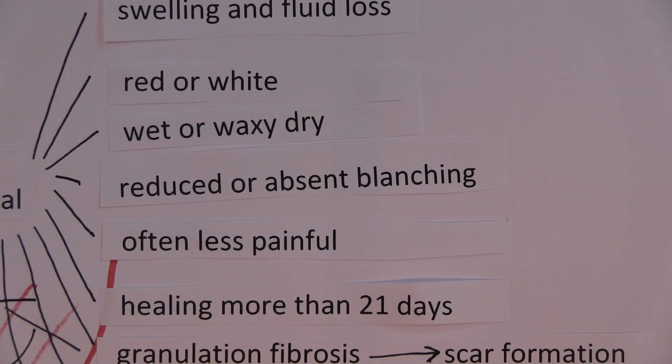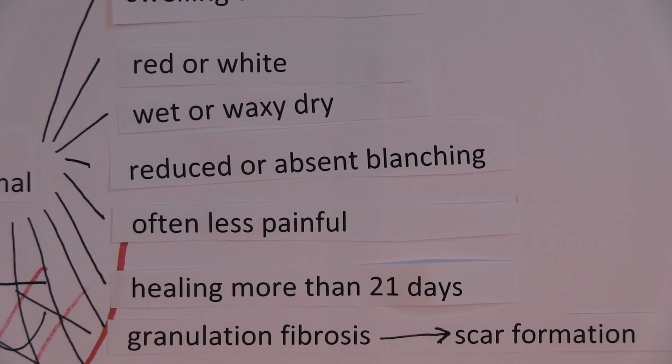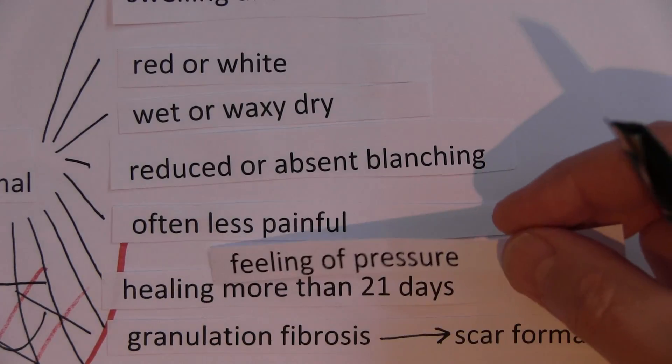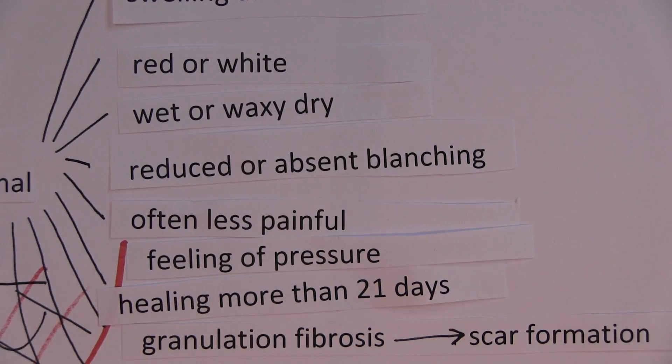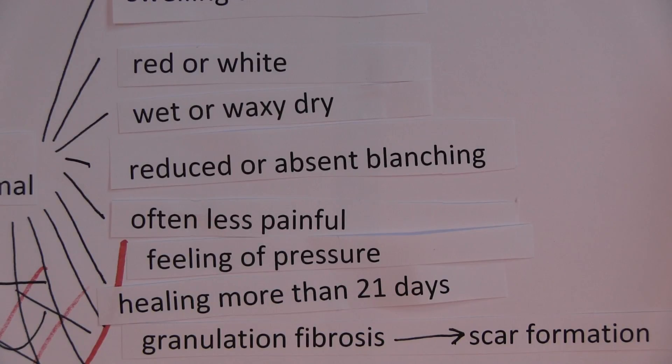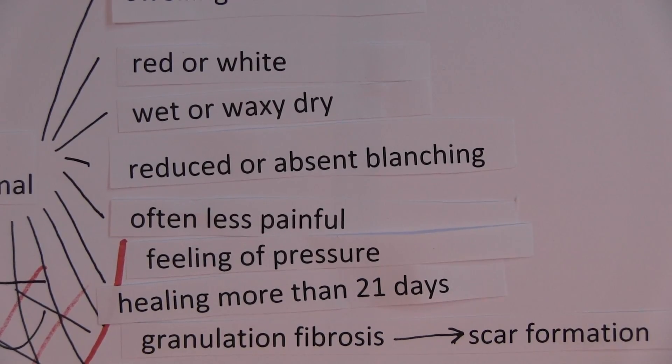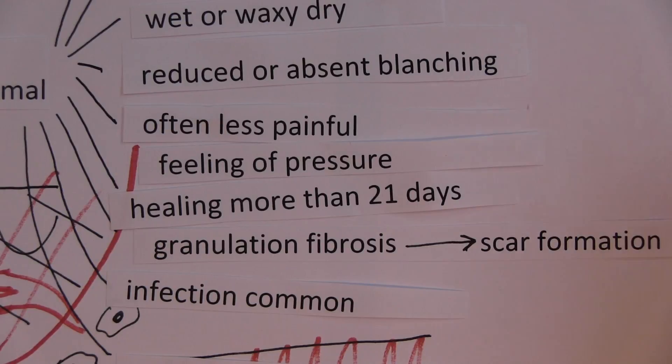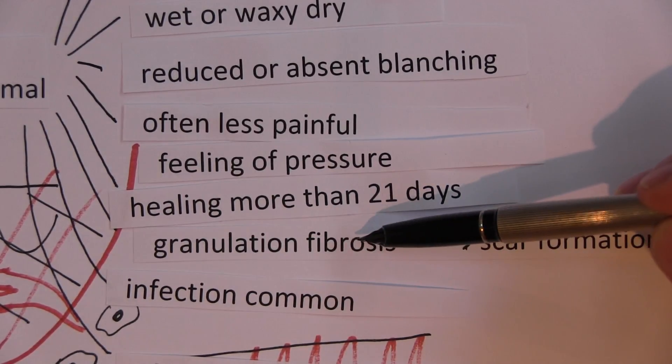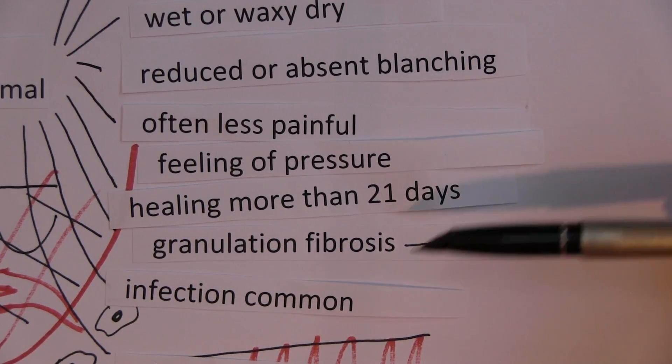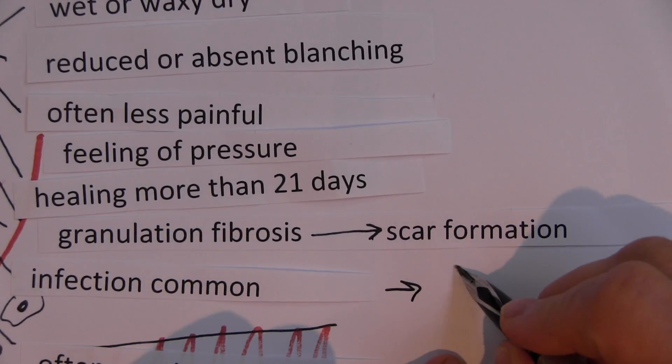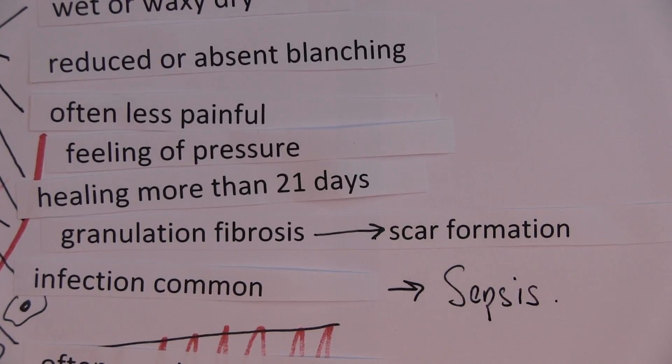So swelling and fluid loss, red or white sometimes, sometimes wet but can be a dry waxy appearance, reduced or absent blanching, often less painful, feeling of pressure very often because of the preserved pressure receptors deeper down in the skin when the dermal nociceptors have been burnt away. Healing can be very problematic. They need a lot of intervention, a lot of measures to prevent infection. Granulation tissue, we'd want to promote. Fibrosis is a problem resulting in scar formation, and the omnipresent risk of infection. I can't really stress this enough, there's a risk of sepsis. Burns can kill you, make no mistake.